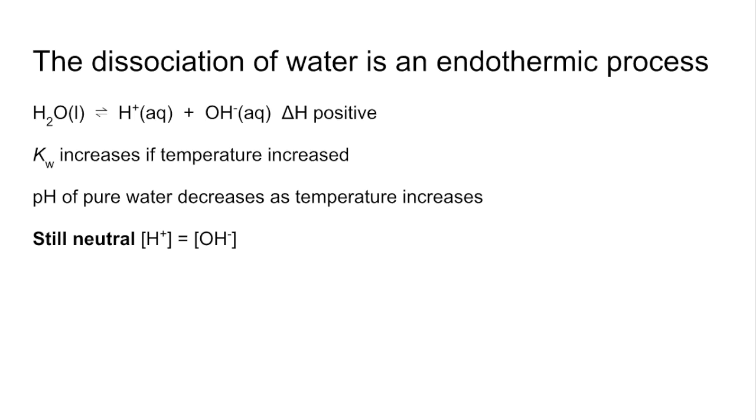We need to be mindful of the fact that the water is still neutral. As long as it's pure, the hydrogen ion concentration equals the hydroxide ion concentration. So we'll try a quick calculation on that. Calculate the pH of pure water at 40 degrees C, given that KW equals the value on the screen now.